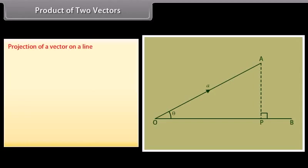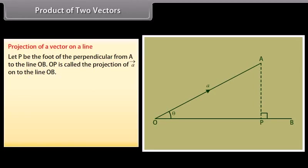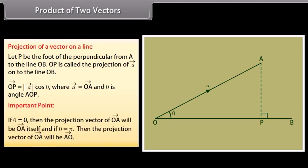Projection of a vector on a line: let P be the foot of the perpendicular from A to the line OB. OB is called the projection of vector A on the line OB. Vector OP equals the magnitude of vector A times cos theta, where vector A equals vector OA and theta is the angle AOP. If theta equals 0, the projection vector of OA will be vector OA itself; if theta equals pi, the projection vector of OA will be vector AO.